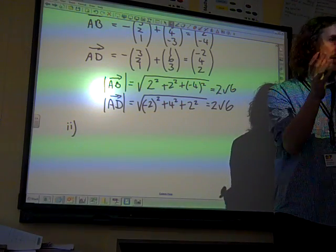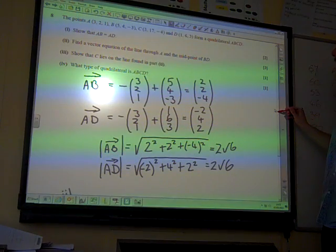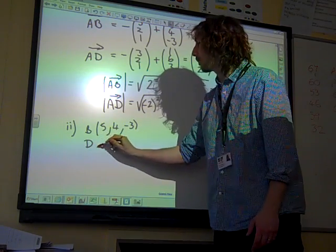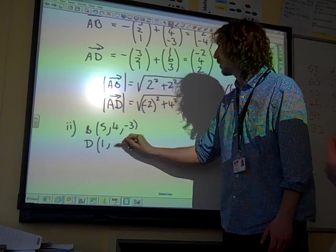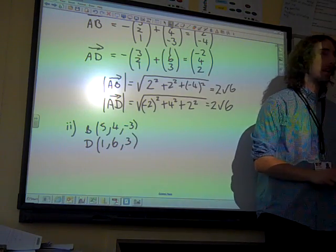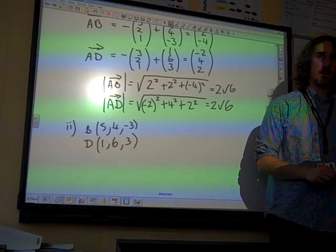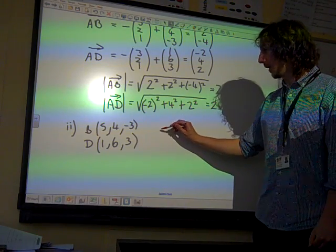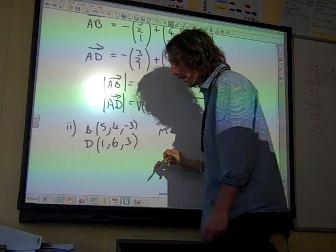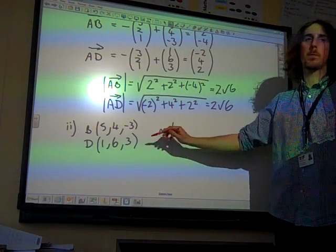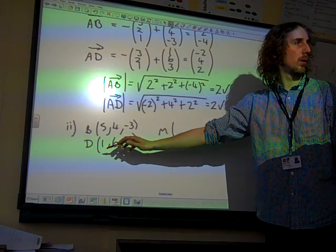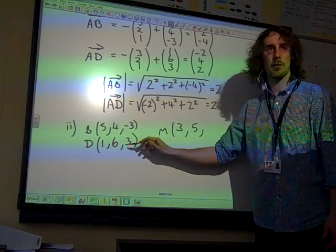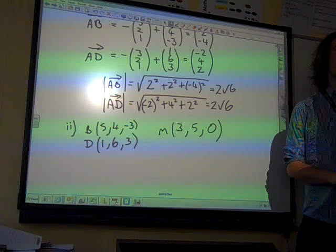Just because we're in three dimensions doesn't make any difference to this. The points B and D were, well, B is 5, 4, minus 3, and D was the point 1, 6, 3, wasn't it? And so the midpoint, do you remember from core 1, you add together the components and divide by 2, it's the average of those values. So the midpoint would be 5 plus 1 over 2, that gives us 3. 4 plus 6 divided by 2, that gives us 5. And minus 3 plus 3 divided by 2, that gives us 0. So that's our midpoint.